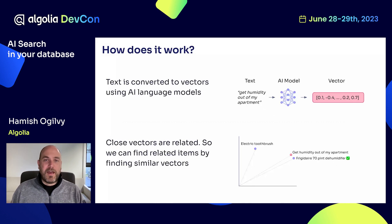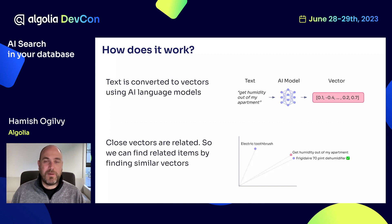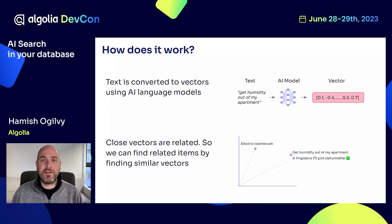Looking at an example: "get humidity out of my apartment." This is an example where keyword search fails, but vector search successfully retrieves a relevant product. There are two different types of retrieval going on — keyword search and vector search — and vector search is essentially trying to find the most similar things in meaning. The query and the items are both converted into vectors and you're looking to find similar things. The text gets converted into vectors via an AI model, and then you're looking in vector space — here shown in two dimensions, but in real life we use hundreds of dimensions from the AI models. You can see the dehumidifier is closer to the query than the electric toothbrush, which is what we'd expect.